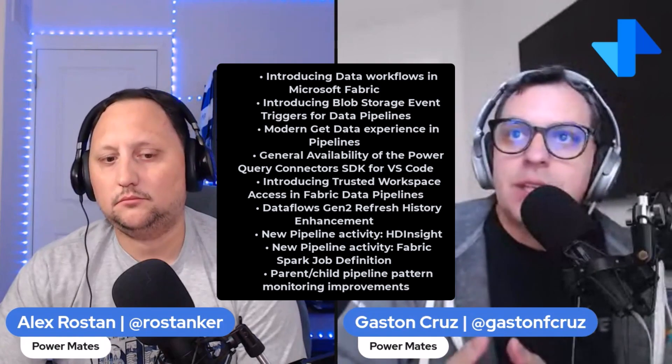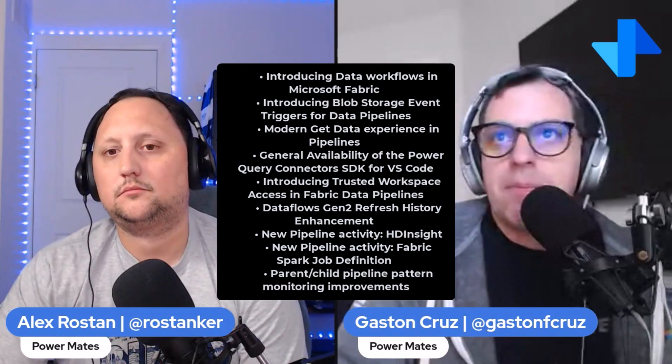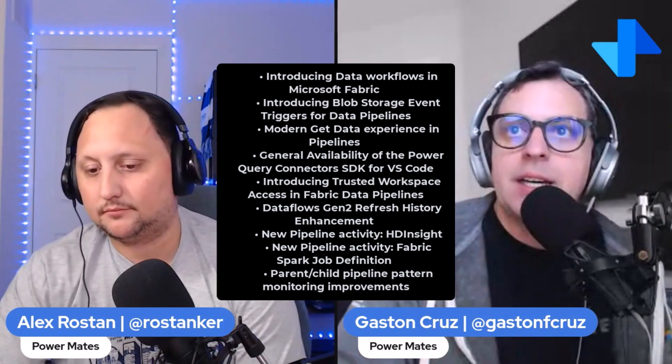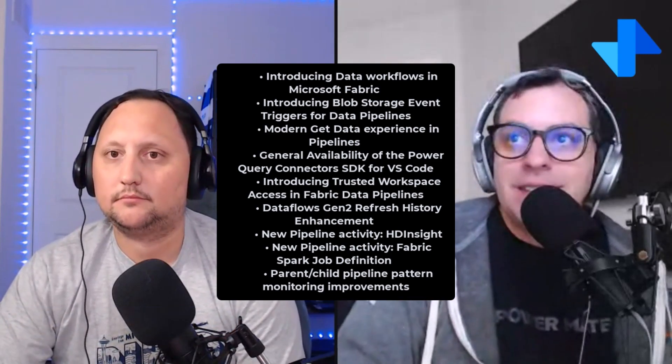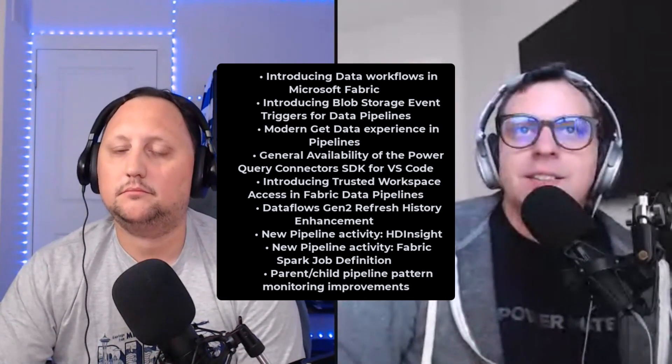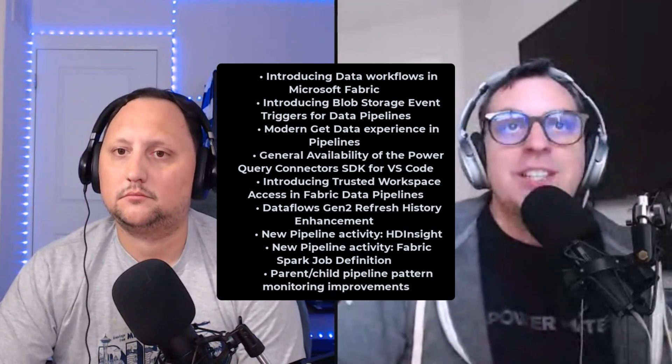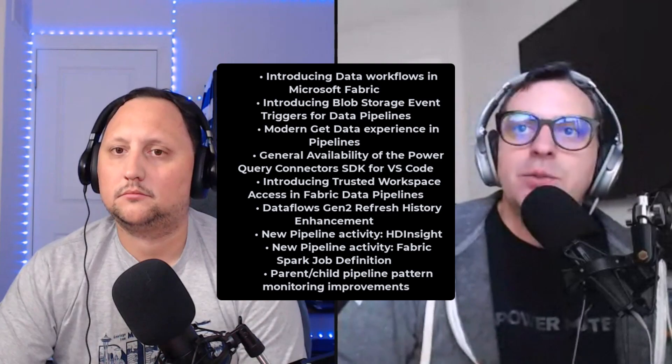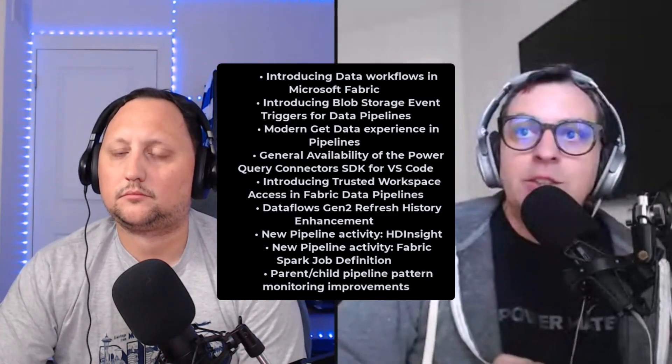For data integration, there are many things happening: introducing Data Workflows in Fabric, blob storage event triggers for data pipelines, and a revamped Get Data experience in pipelines. Also going GA are the Power Query connectors SDK for Visual Studio Code, Trusted Workspace Access in Fabric data pipelines, Dataflow Gen2 refresh history announcements, new pipeline activities for HDInsights and Spark job definitions, and parent-child pattern monitoring improvements. So a lot is going on in the data and AI space — we'll be exploring more details in upcoming videos.